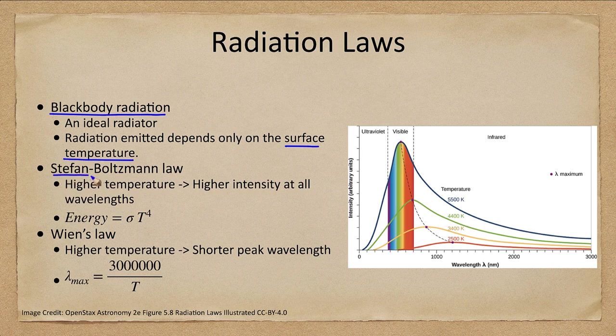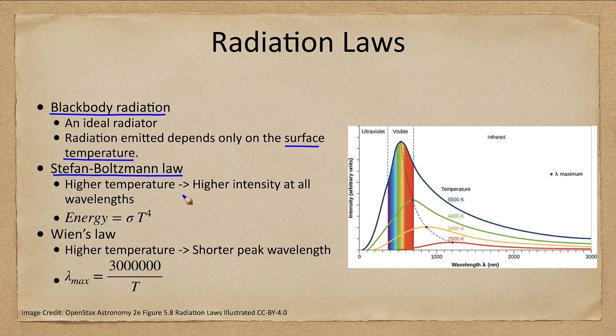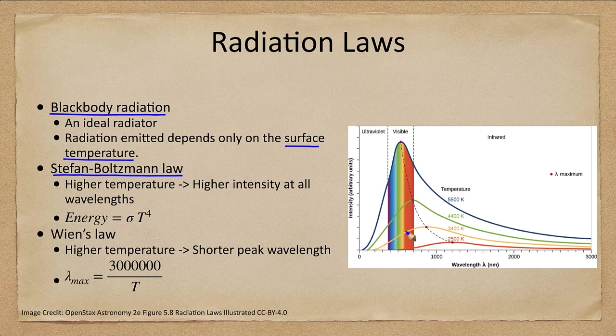Now, the two laws we want to look at are the Stefan-Boltzmann law, which tells you that a higher temperature means you have a higher intensity at every single wavelength. So these curves here for 5,500 Kelvin, 4,400, 3,400,